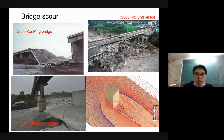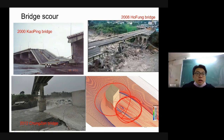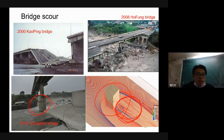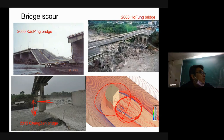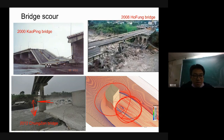This is a simulation of scour. During the scour there is a big hole for the bridge pier. This is the very typical picture. Do you know how high it is in this area? Originally this is the ground surface. Right now the river bed has a big scour problem. How tall is it? More than ten meters. So this is a very big problem in Taiwan.